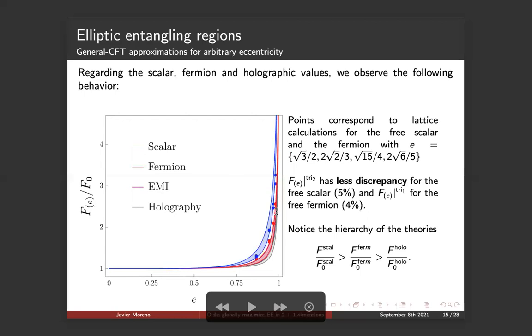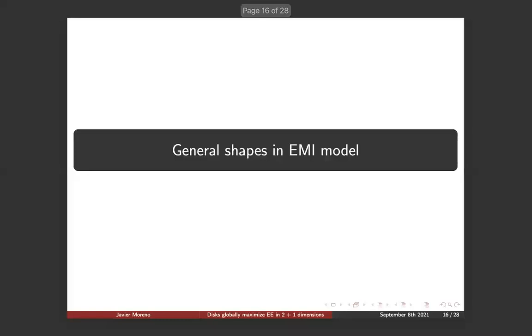The discrepancy for the second trial function grows up to a maximum of 22 percent. It's the one that clearly underestimates, but this one is relevant for the free scalar. In the scalar, fermion, and holographic values, we observe this second behavior. We compute numerically following two different procedures to find the values for certain values of the eccentricity, and then we plot them against the trial function. The trial function second has a better fit with the free scalar, and the trial one a much better one with respect to the fermion. And also, a very interesting observation here is that you can clearly see a hierarchy of the theories when dealing with elliptic entangling regions, and it's that the f for the scalar is always greater than the f of the fermion and the f of the holographic, each of them normalized over the disk one.